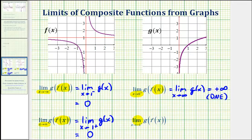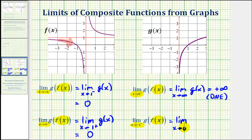For our last limit, we have the limit as x approaches negative one from the negative side or left side of g of f of x. We'll first consider what's happening to function f as x approaches negative one from the left side. As we're approaching x equals negative one from the negative side, we're moving along the graph in this direction, and we're approaching the function value of zero from values that are greater than zero, because we're above the x-axis. This is going to be equal to the limit as x approaches zero from the positive side of the outer function g of x.